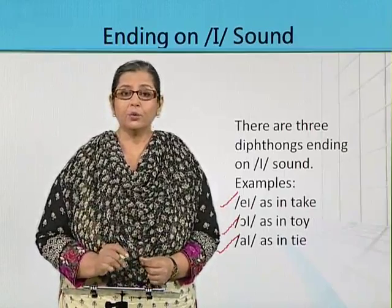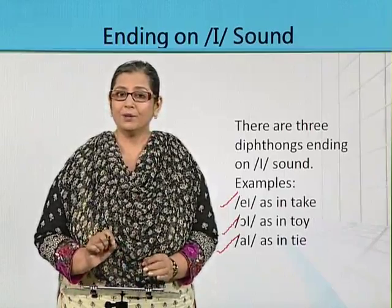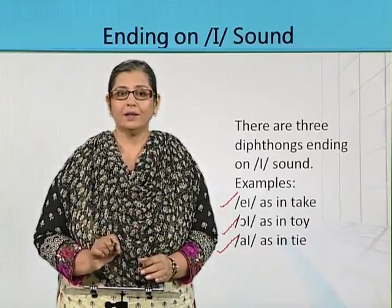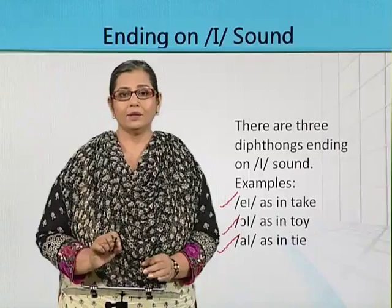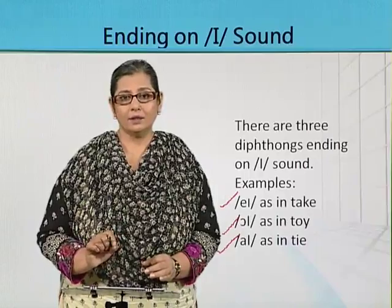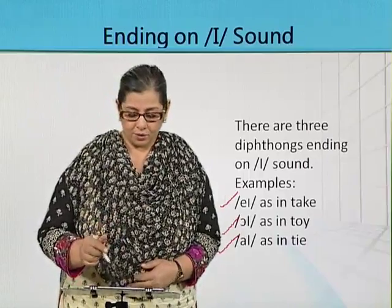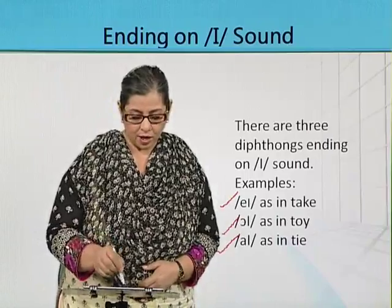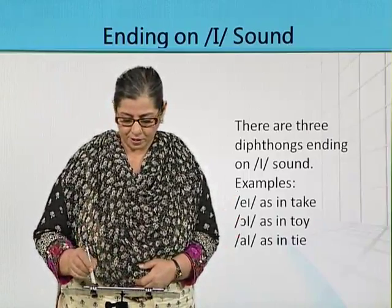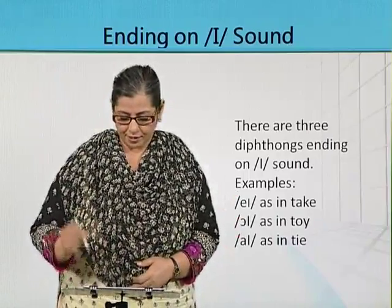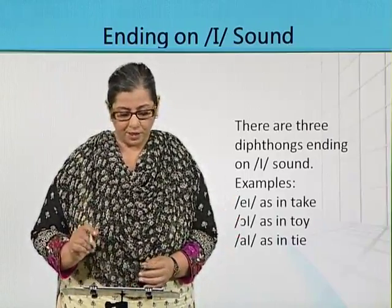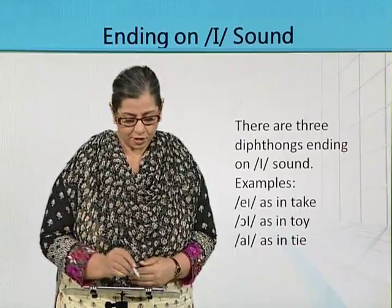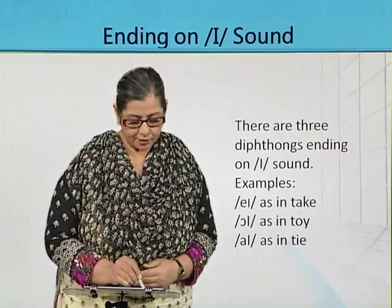You can see these three words clearly: A-E, O-E, and A-E. The ending sound is E. You can see this grouping — it's the second group. These are the diphthongs which are ending at the E sound.